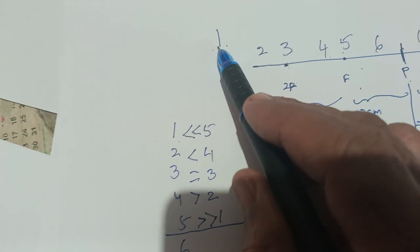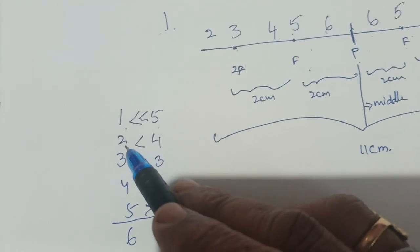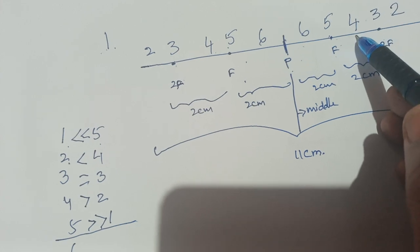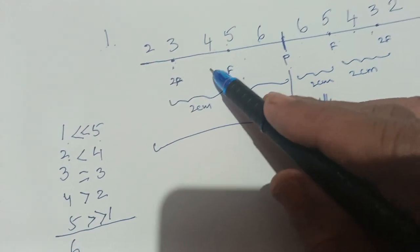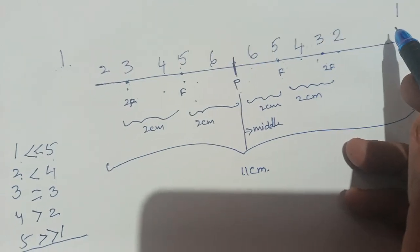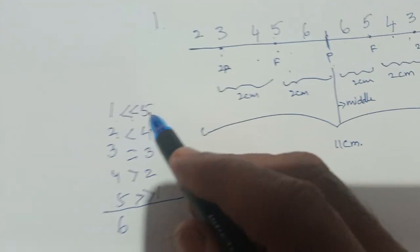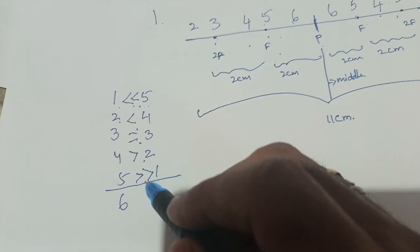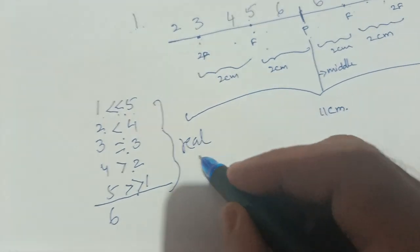5 is more greater than 1. So what it indicates is very easy to remember: if you keep the object at position 1, you will get the image at position 5. If you keep the object at 4, the image forms at 2. If you keep the object at 3, the image forms at 3. If you keep the object at 5, the image forms at 1. So: position 1 gives a dotted tiny image, smaller image, equal image, greater image, and very large image.